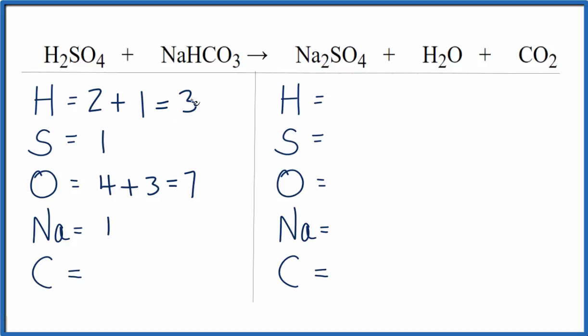One sodium atom and one carbon atom. Over on the product side, we have the two hydrogens. Sulfurs, we just have one. Oxygen's four, plus the one, plus the two. That's five, seven of those.